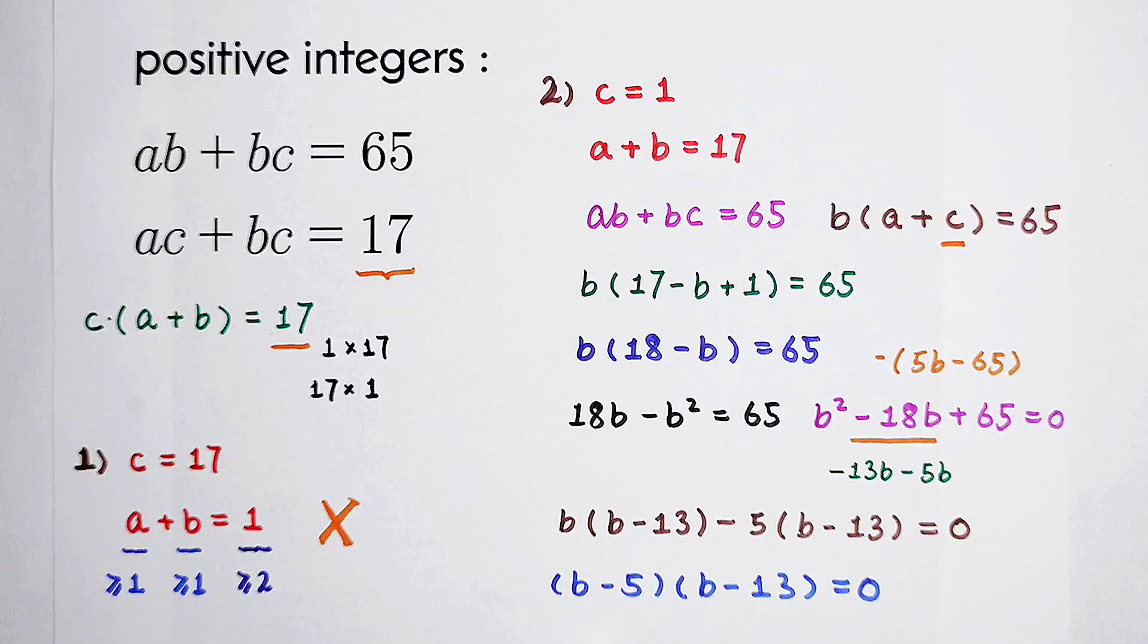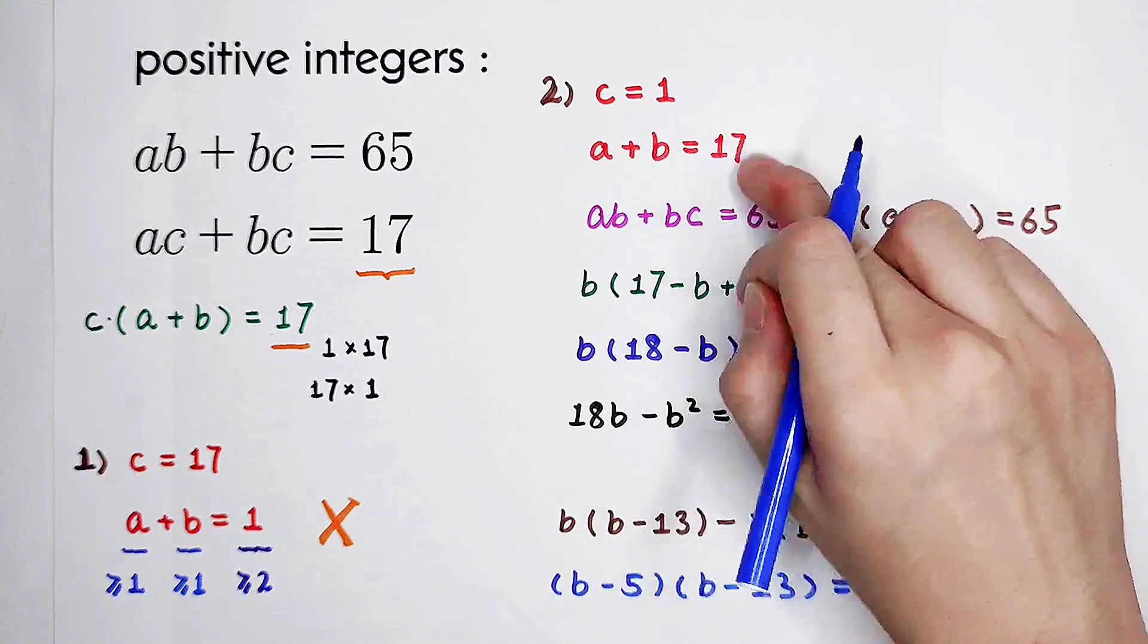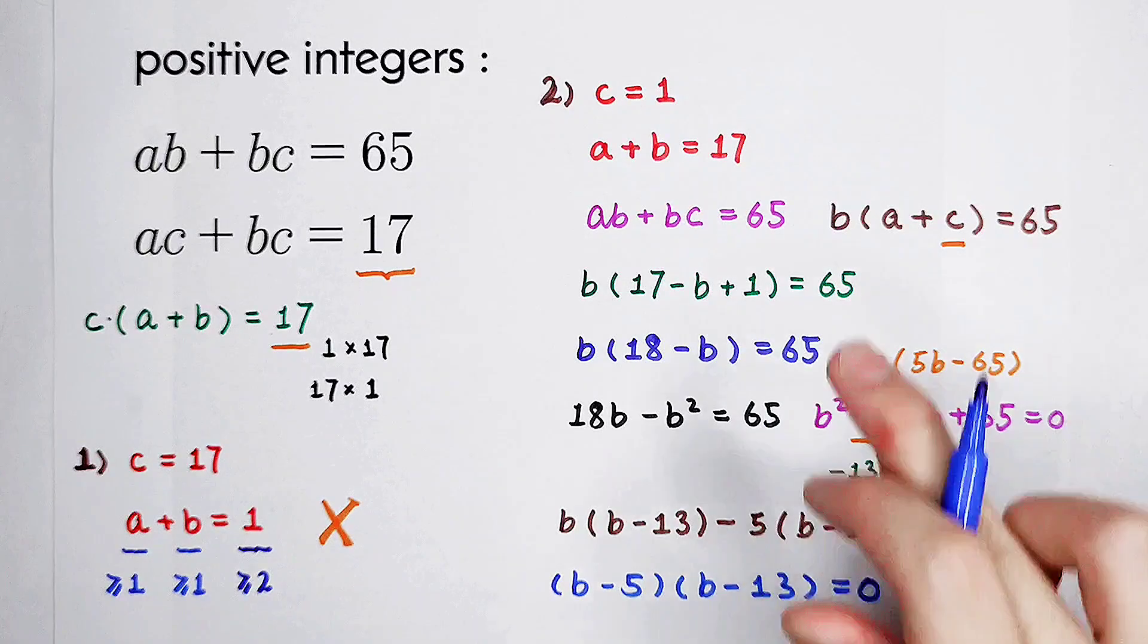b minus 5 times b minus 13 is 0. So b1 is 5, b2 is 13. And then, a1 is 12, a2 is 4.